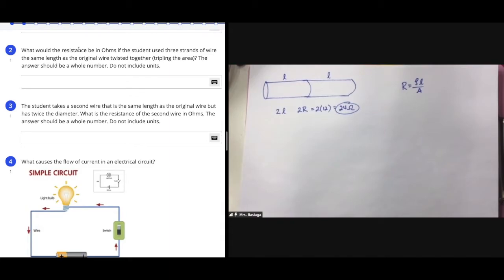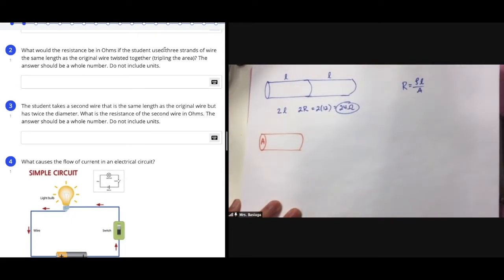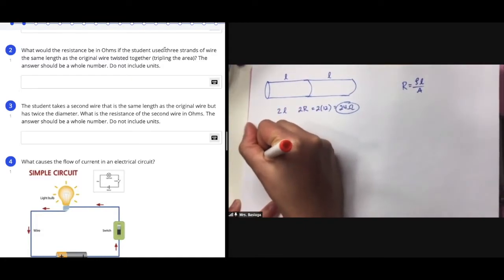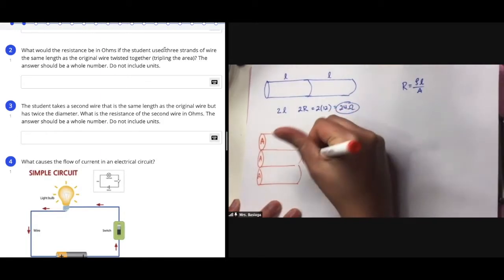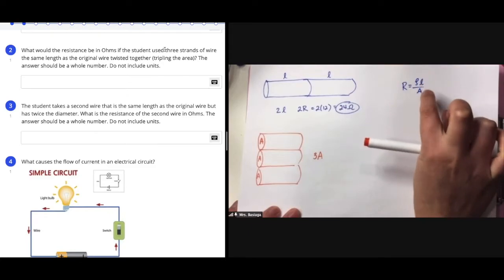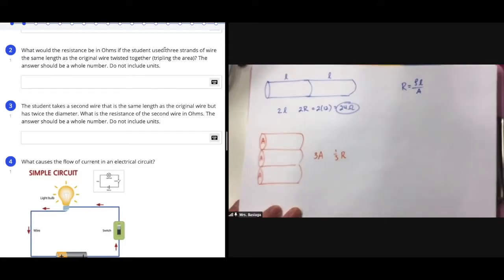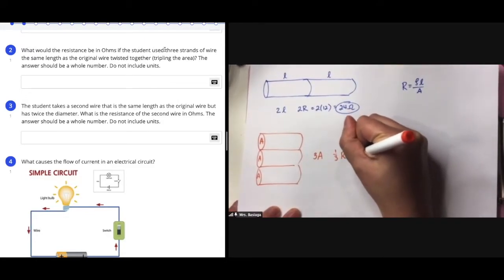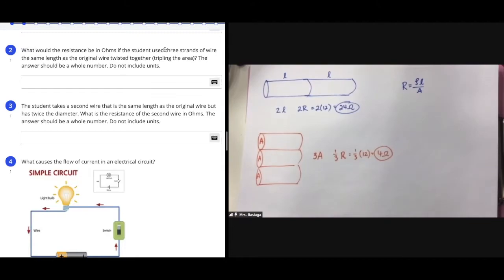What would the resistance be if we used three strands of wire instead? Using three strands of wire would triple the cross-sectional area. The electrons would have more space to go through, kind of like opening up an extra lane on the highway. If you triple the area, it goes in the denominator, so resistance becomes one-third of the original. One-third of 12 is 4 ohms, so I'll enter just the number 4.